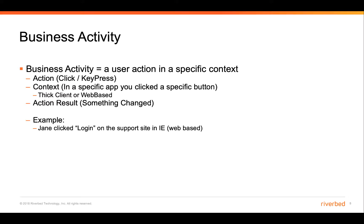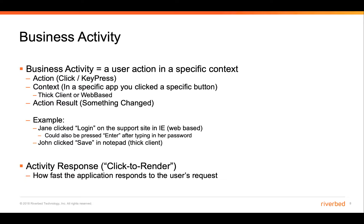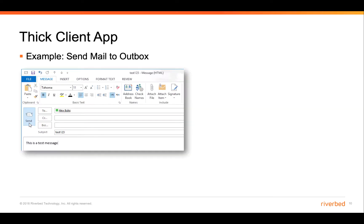For example, Jane clicked login on the support site in Internet Explorer — a web-based business activity where we want to monitor the time from when the login button is clicked to the time the page is actually displayed. The user could also press Enter after typing her password. Another example would be John clicking save in Notepad — a thick client application — and the time it takes from the save button being clicked to the time the dialog goes away. The activity response is where we monitor click-to-render performance: specifically, how fast the application responds to the user's request. We break down this response time into client, network, and backend time.